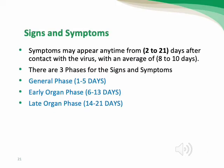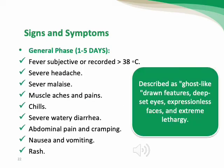Signs and symptoms may appear 2 to 21 days after contact with the virus, with an average of 8 to 10 days. There are three clinical phases. The general phase, days 1–5, includes fever greater than 38°C, severe headache, severe malaise, muscle aches and pains, chills, severe watery diarrhea, abdominal pain and cramping, nausea and vomiting, and rash. The clinical picture is described as 'ghost-like' features: deep-set eyes, expressionless face, and extreme lethargy.